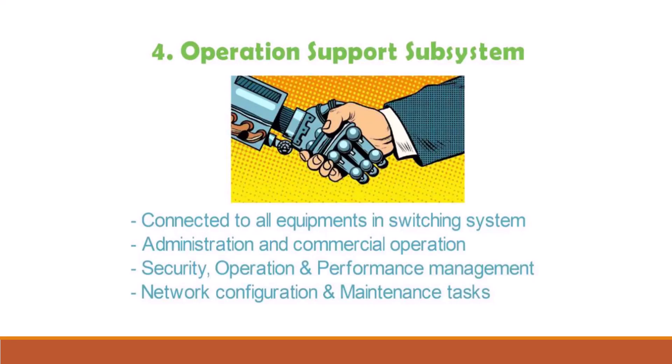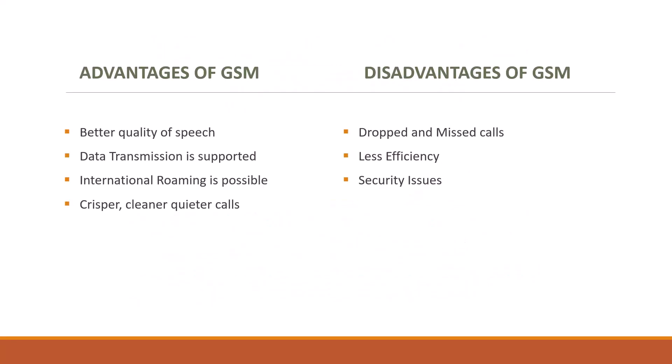Now let's see some advantages and disadvantages of GSM. Advantages of GSM: better quality of switch, data transmission is supported, international roaming is possible, and crisper, cleaner, quieter calls. Disadvantages of GSM are frequent dropped and missed calls, less efficiency, and security issues.